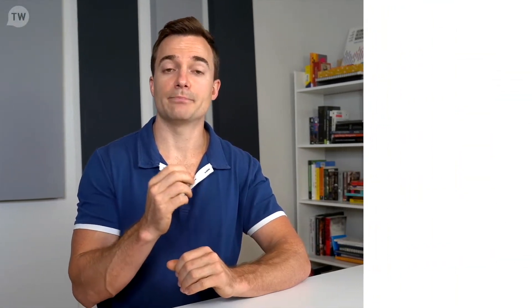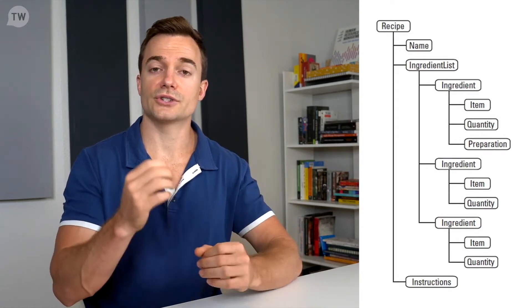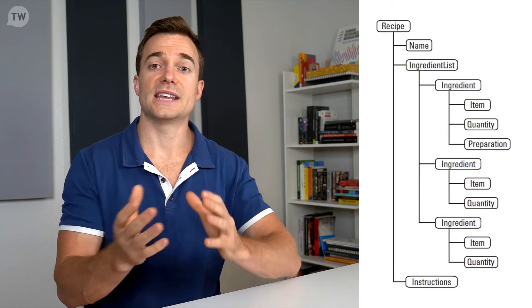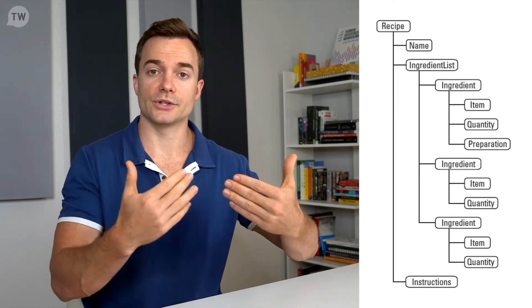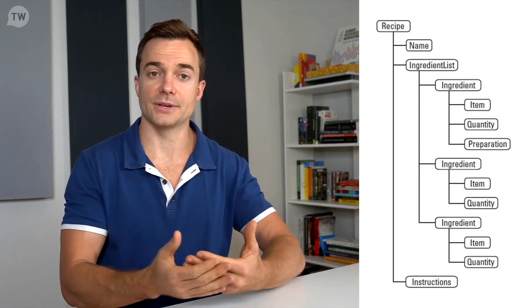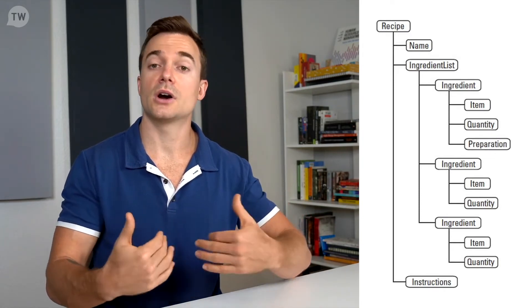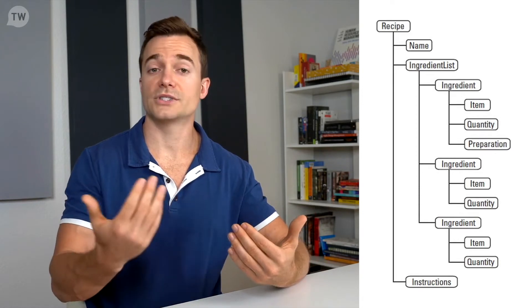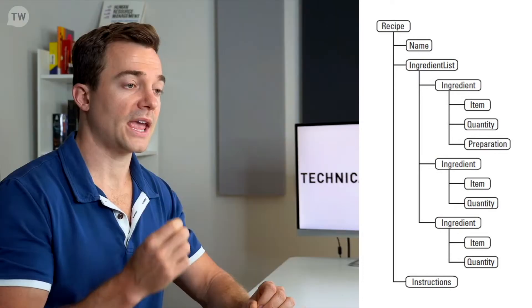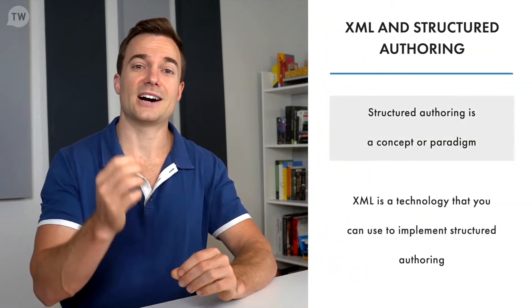Let's look at an example to better understand the difference between unstructured and structured authoring. This is the content hierarchy for a structured recipe — the name comes before the ingredient list, which comes before the instructions. Structured authoring maintains this hierarchical structure. In an unstructured formatted recipe, relationships between content elements are implied by how the type looks — for example, the recipe name in large bold type and ingredients in smaller type — and the publishing software will not enforce the content hierarchy.